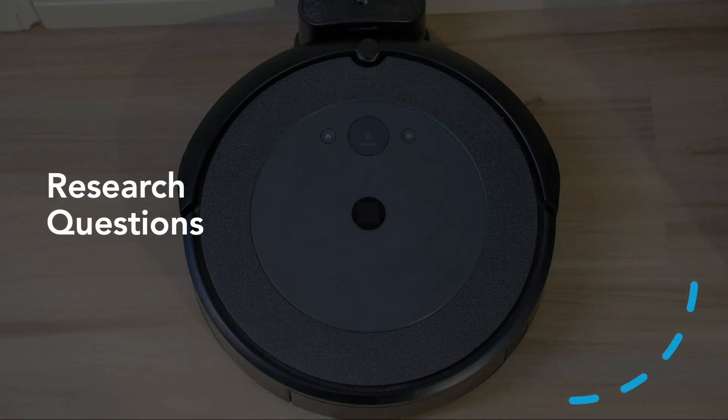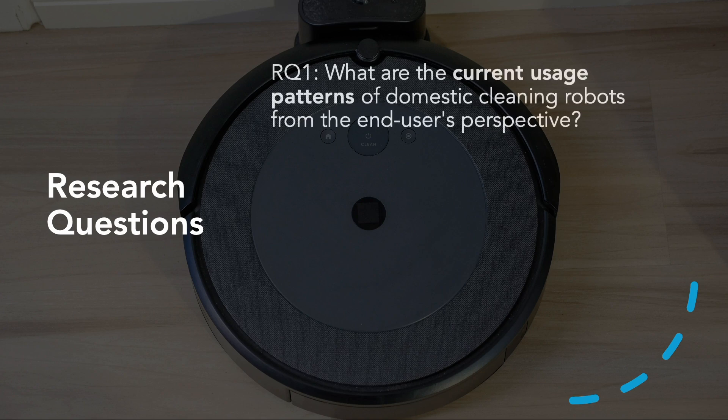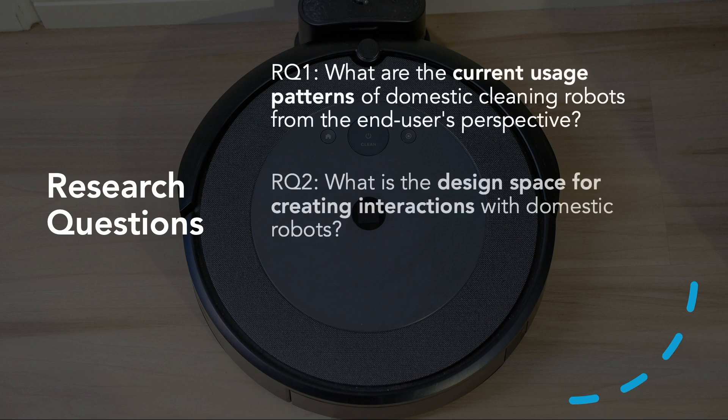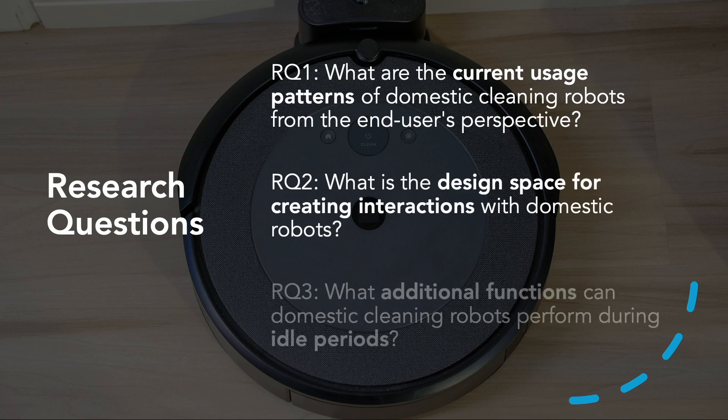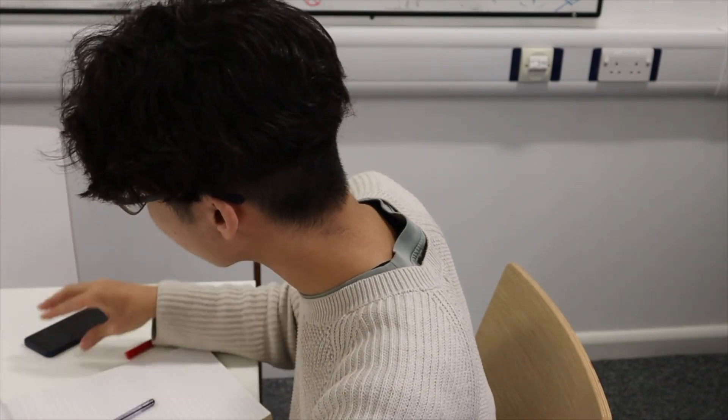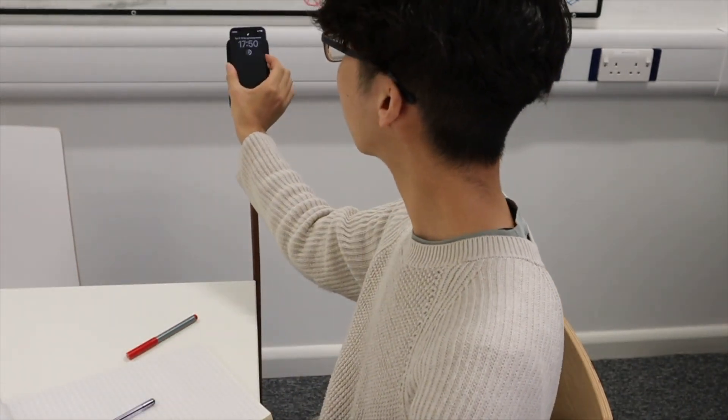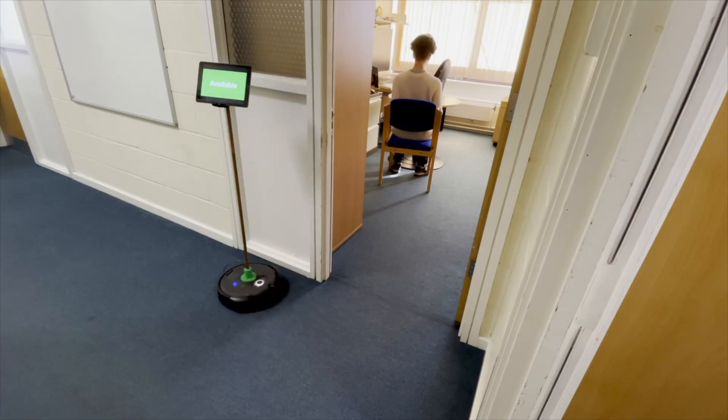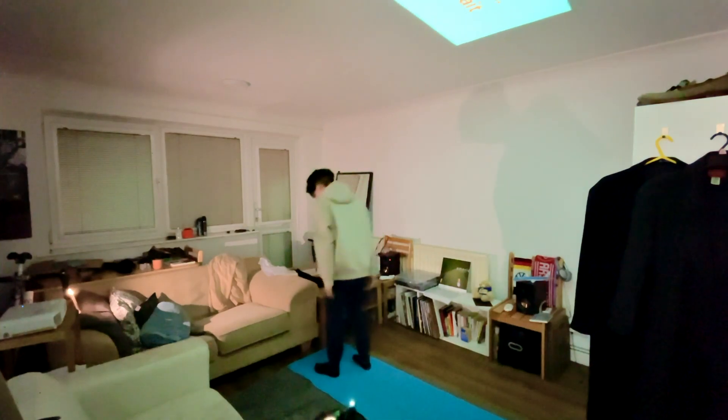To guide our investigation, we formulated three key research questions. First, we explore how people currently use domestic robots. Second, we develop a design space for creating meaningful interactions with these robots. Finally, we identify novel applications to enhance functionality during idle periods. Through our work, we aim to reposition domestic robots as valuable tools that support modern lifestyles.